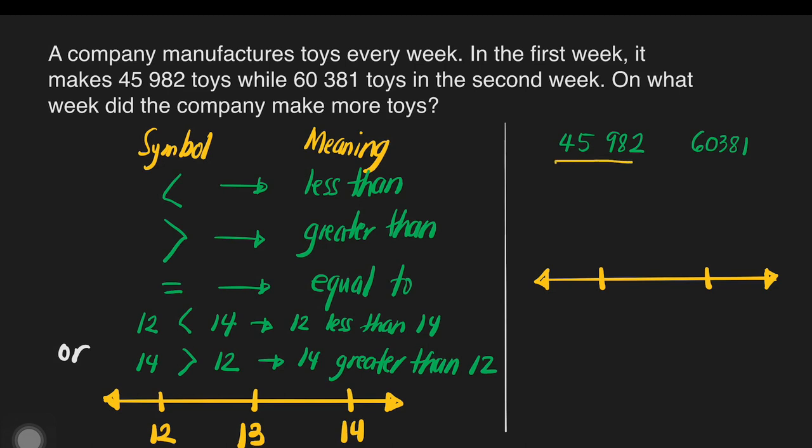In their ten-thousandth place, we have, in this number, we have four, and in this number, we have six. Which do you think is lesser?